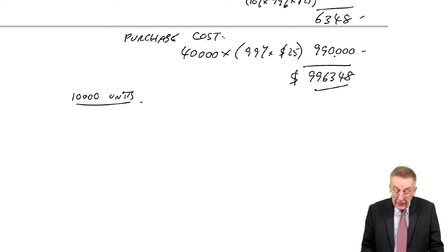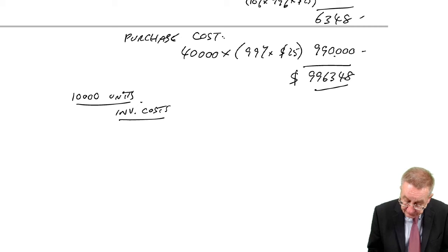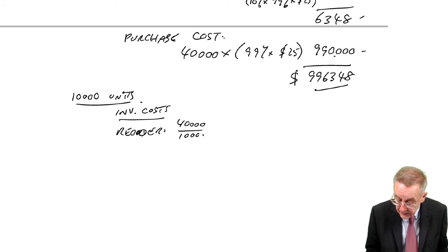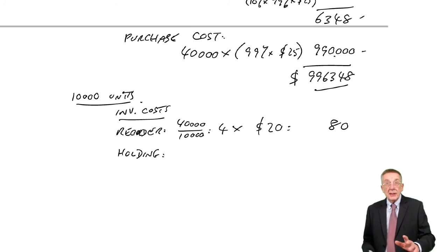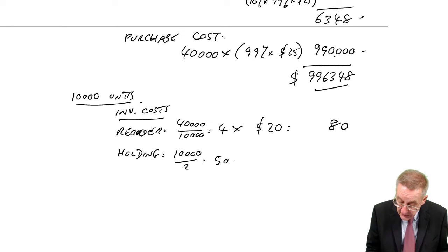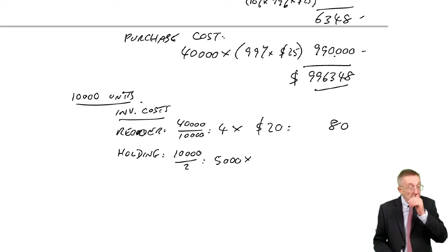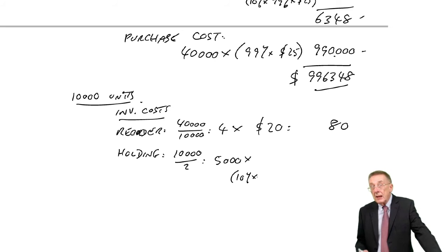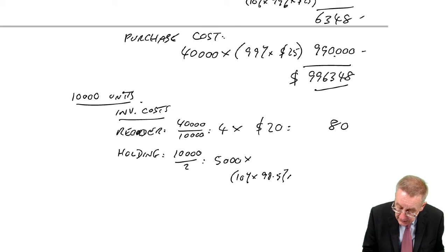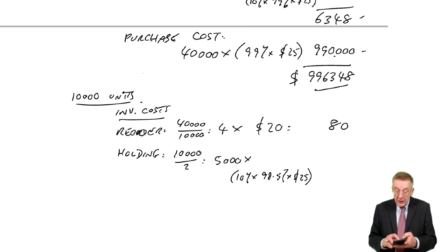Let's try 10,000 and see if that's any cheaper. The inventory costs: the reorder cost, 40,000 a year, 10,000 each time, so 4 orders at $20 an order, it's $80. The holding cost: if we're ordering 10,000 each time, the average inventory will be 5,000 units. The holding cost will change a tiny bit. It was 10% of inventory value. The cost of inventory was $25, but we're now getting a 1.5% discount, which means the cost will only be 98.5% of 25.